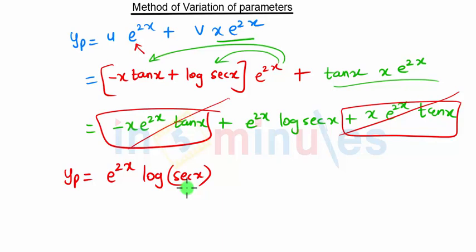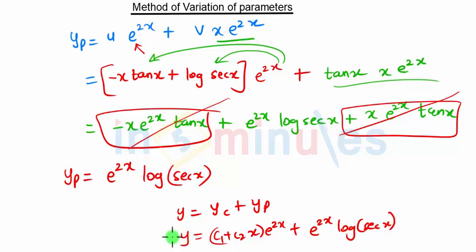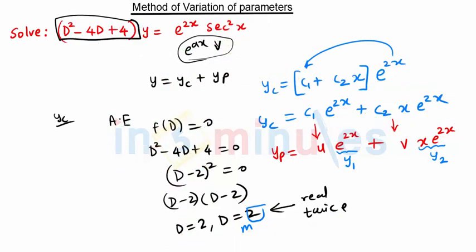This is how we find yp using the method of variation of parameters. The final solution is y equals yc plus yp. We found yc as (c1 + c2·x)·e^(2x), plus yp which is e^(2x)·log(sec x). In an exam, this problem would be given as: solve using the method of variation of parameters. You follow this procedure, or you can solve it using the e^(ax)·v type method. More such problems will be covered in the next video.